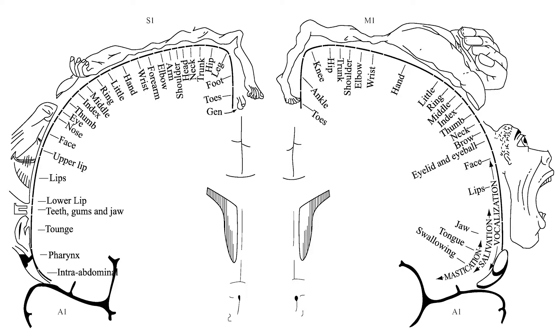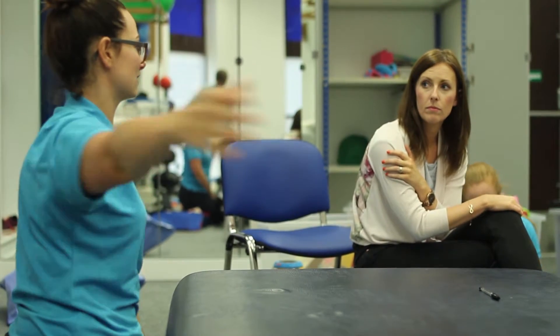Try to imagine a map of your entire body across the brain. The parts of your body that you use the most will have a bigger representation on that map. For example, your eyes, your lips, your tongue and your fingers will all have a bigger part on this map as they are used most for sensation and function.